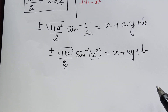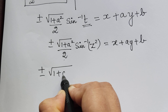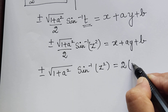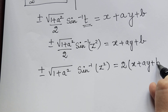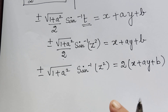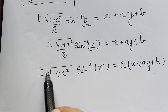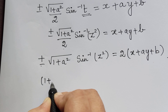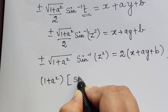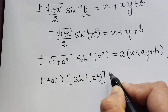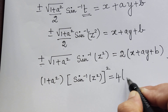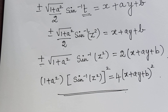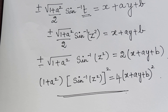Taking the 2 in the denominator to the right, we get plus or minus square root of 1 plus a squared, times sin inverse of z squared, equals 2 times the quantity x plus ay plus b. We can leave this as the final answer, or square both sides to remove the square root: 1 plus a squared, times sin inverse of z squared, the whole squared, equals 4 times x plus ay plus b, the whole squared. This is the final solution. I hope you understood this problem. Thank you.